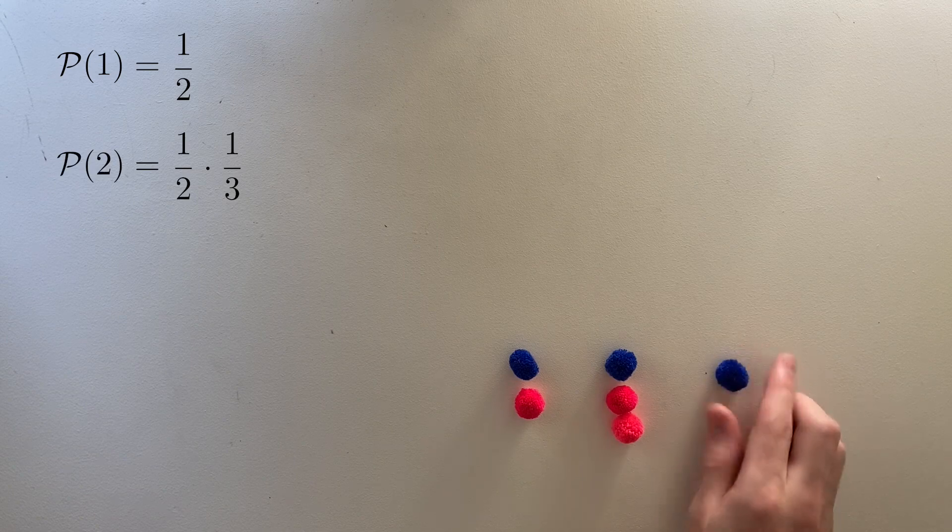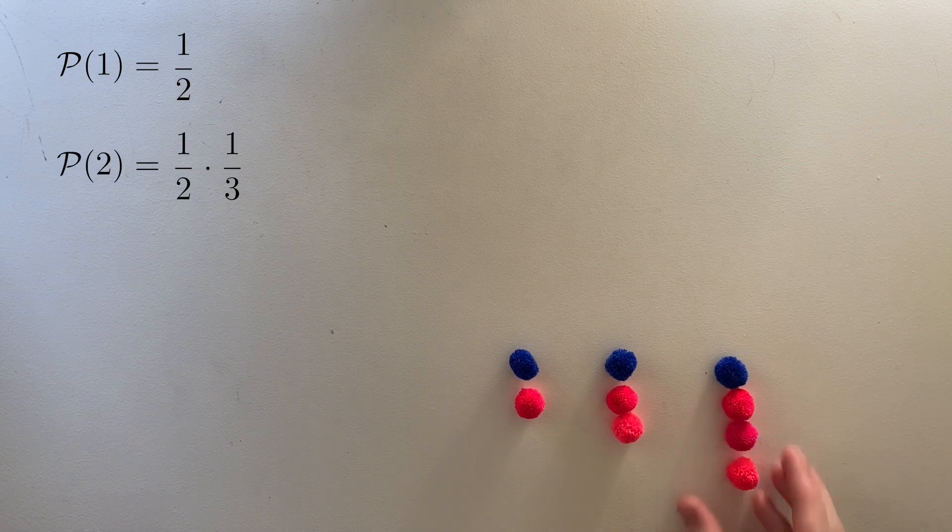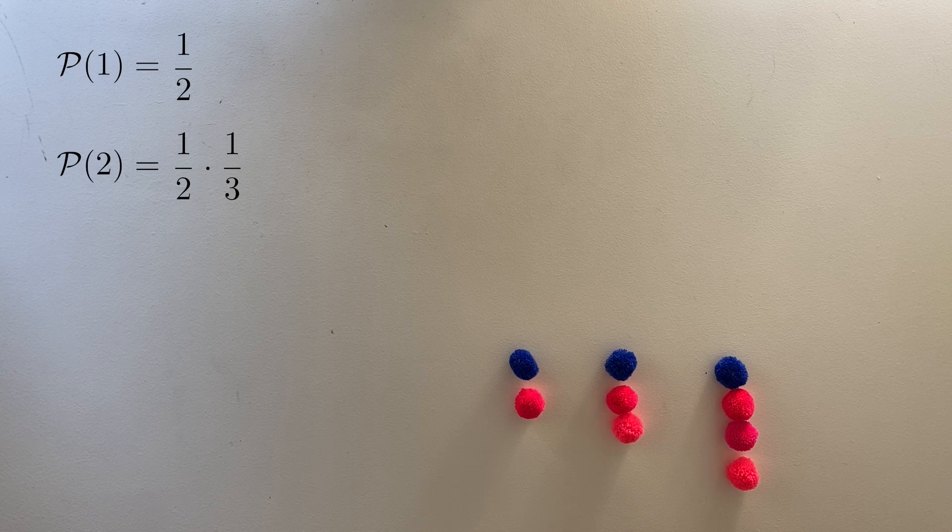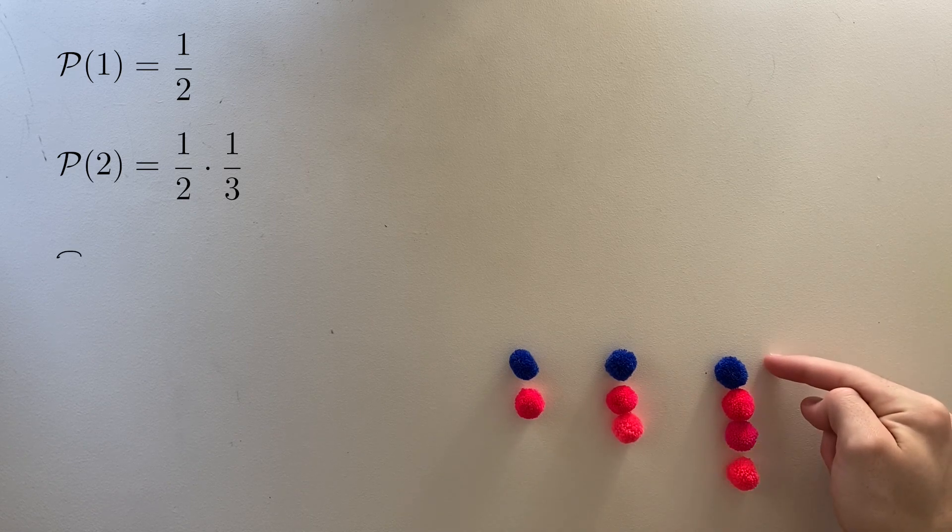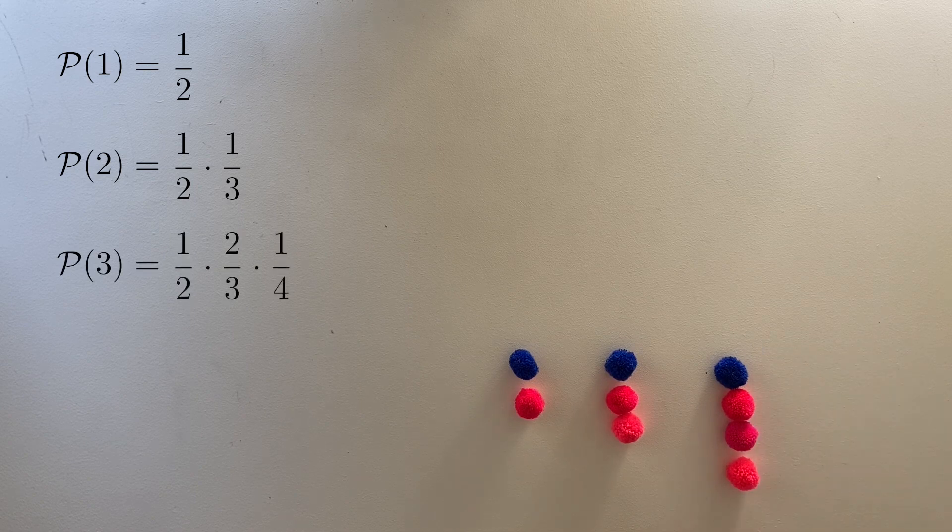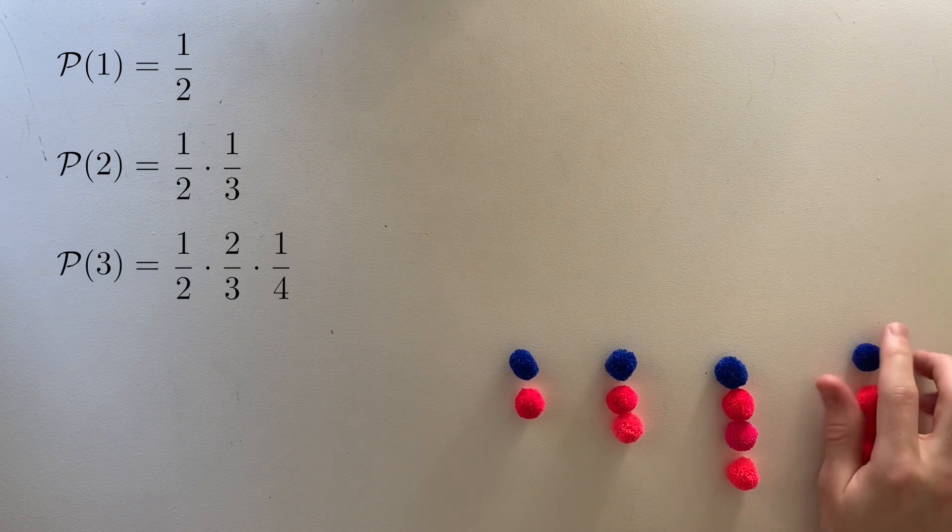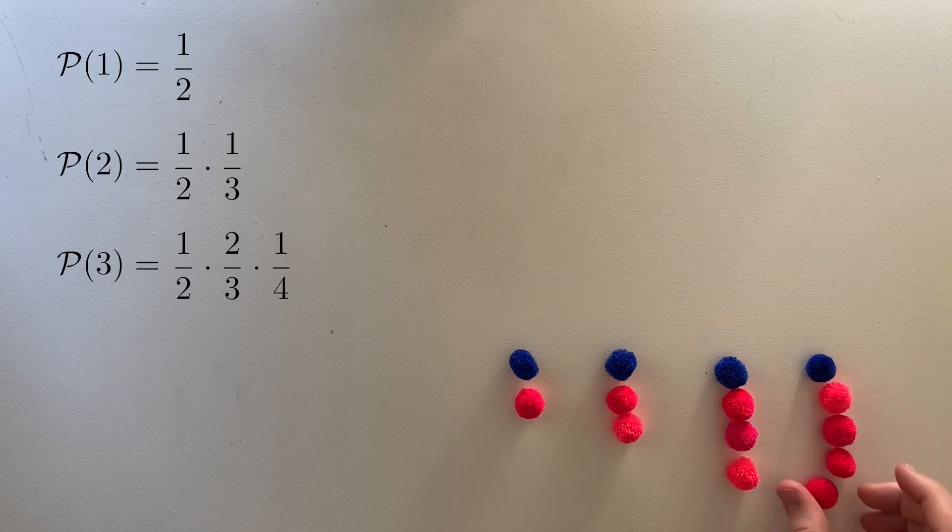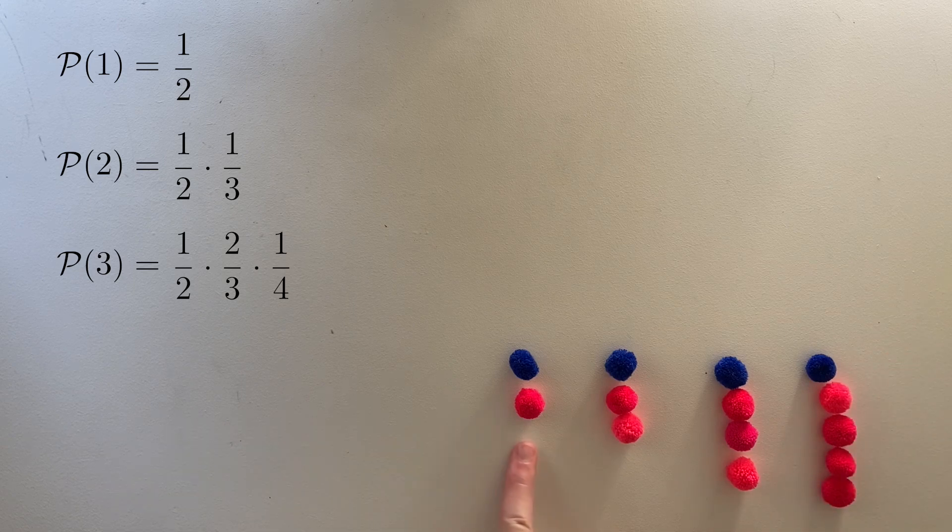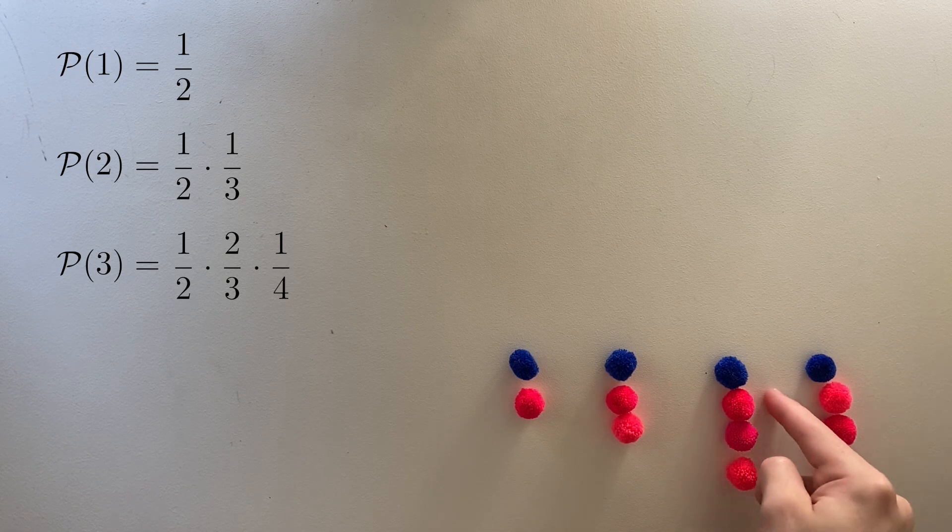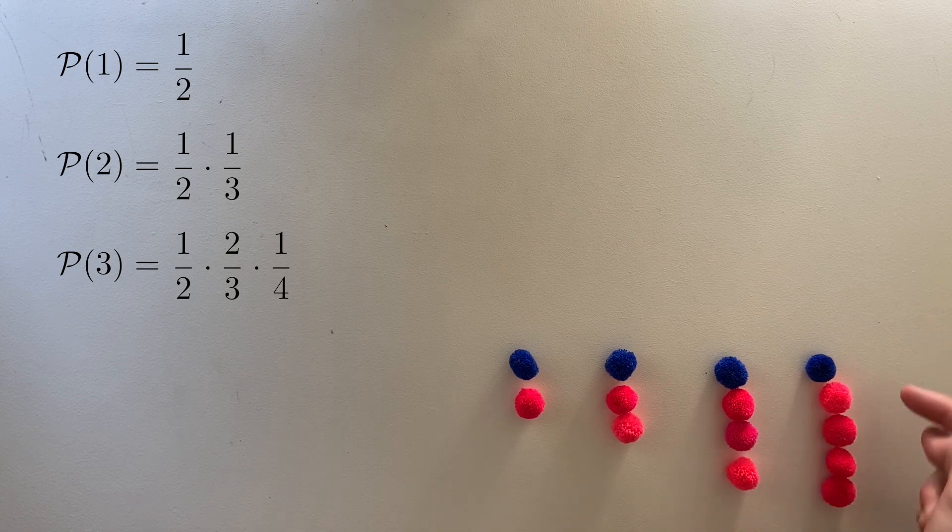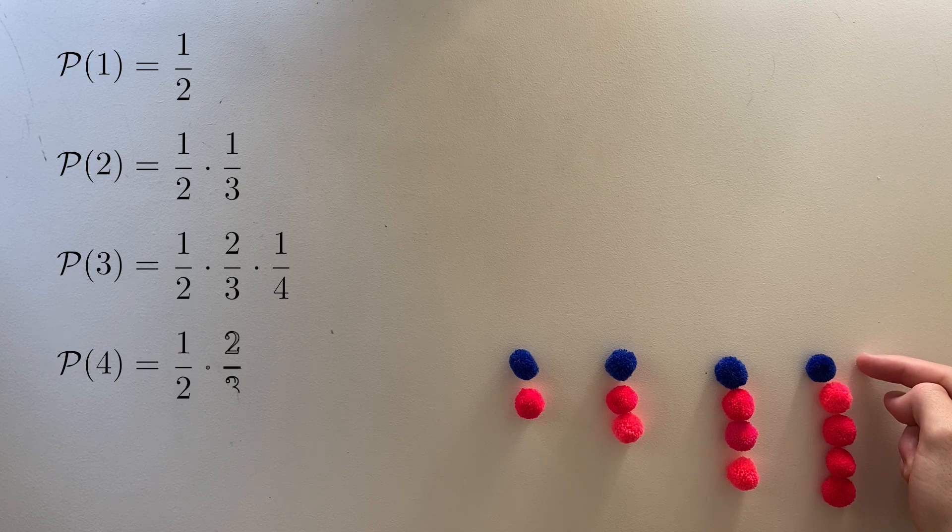In order to get the blue ball on round three, we need to draw a red ball on the first two rounds, and the blue ball on the third. So that's a half for round one, two-thirds for round two, and one-quarter for round three. Let's do another to make sure we understand the pattern. The probability of drawing the blue ball on round four is a half for the red ball on round one, times two-thirds for the red ball on round two, times three-quarters for the red ball on round three, times one-fifth for the blue ball on round four.